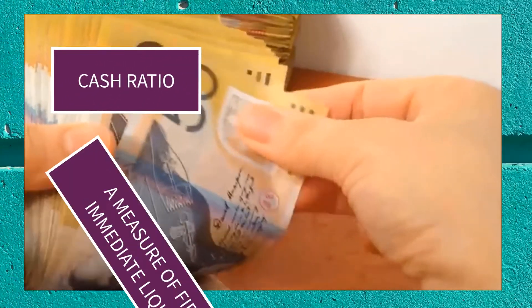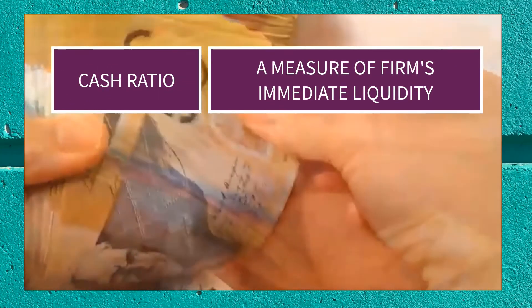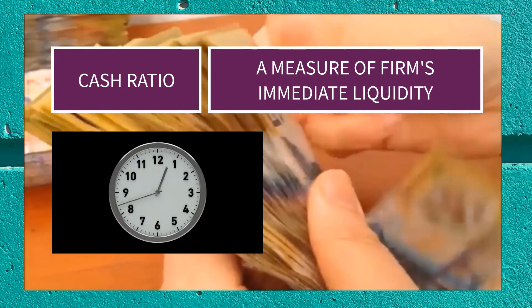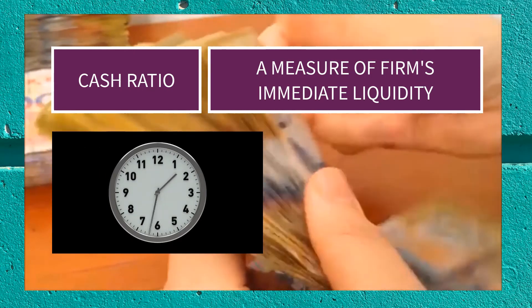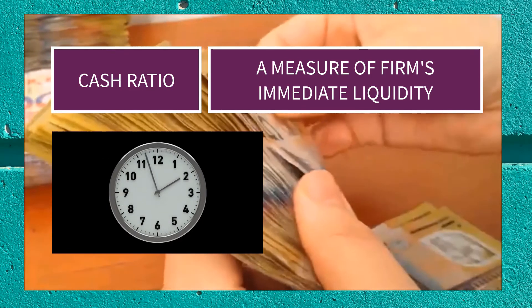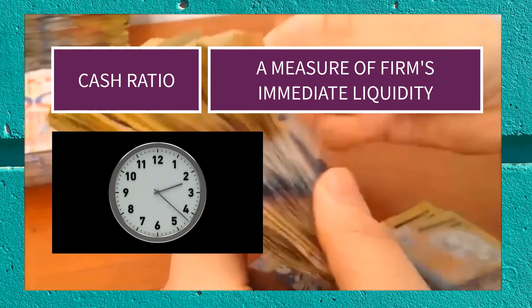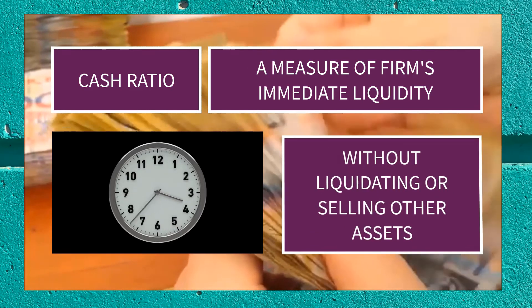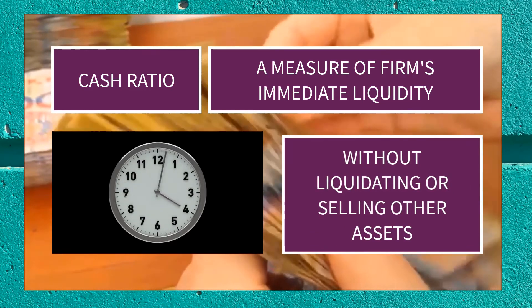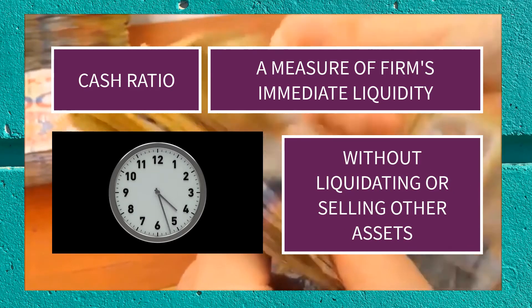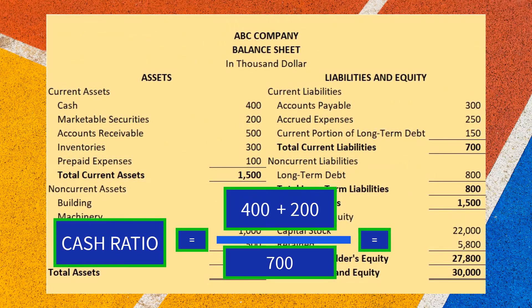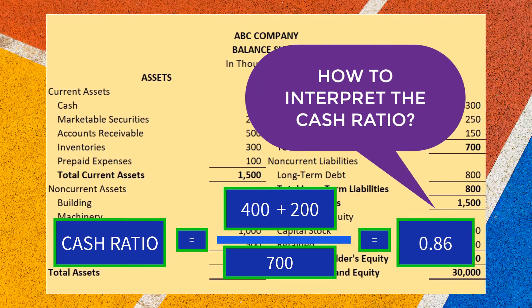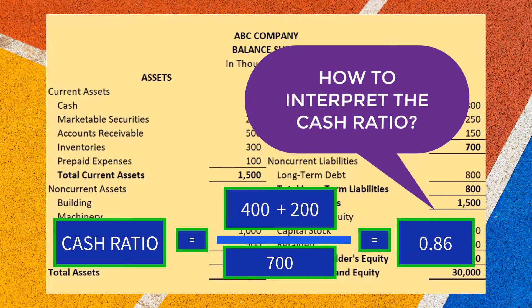It is a measure of a firm's immediate liquidity. If the firm is required to pay all current liabilities immediately, this ratio shows the firm's ability to do so without having to liquidate or sell other assets. In the next video, we will check how the results will be interpreted. Thank you.